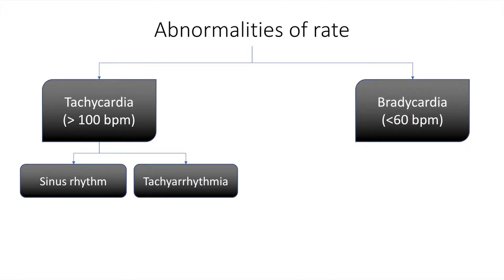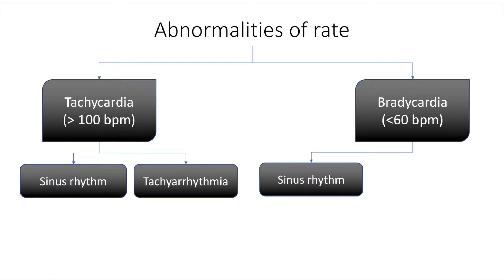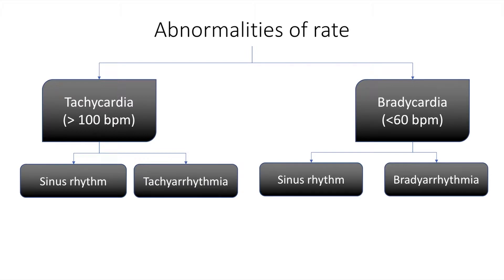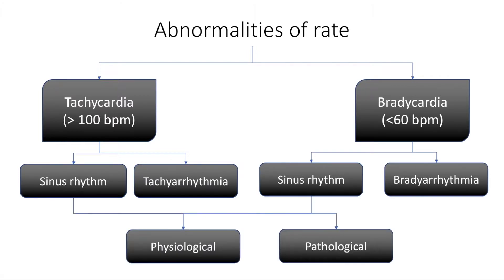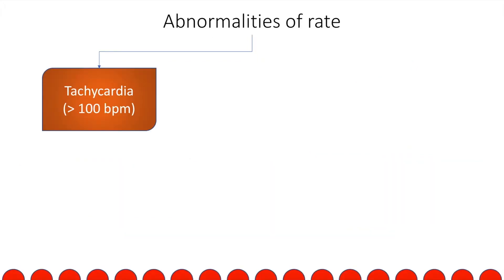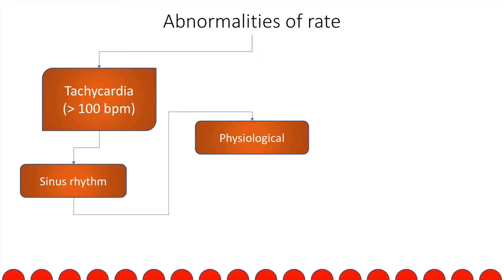Abnormalities of rate may also include bradycardia, which is a heart rate less than 60 beats per minute. Again, this can be either in sinus rhythm, in that each QRS complex on the ECG is preceded by a P wave, or it can be a bradyarrhythmia. Both these conditions can either be physiological or pathological. The abnormalities of rate, as already discussed, can be tachycardia in sinus rhythm.